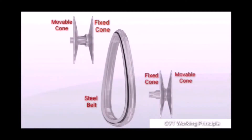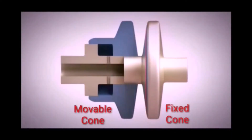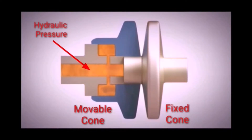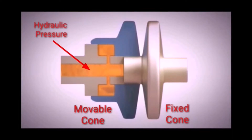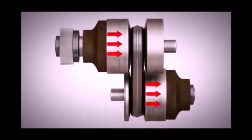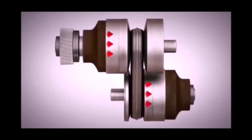CVT consists of two conical pulleys and a steel belt. It has two parts: a fixed cone and a movable cone. The movement of the movable cone of the pulley is controlled with hydraulic pressure, which is supplied through a hollow shaft from the oil pump. According to the driving conditions, the TCM will adjust the width between the cones by adjusting the hydraulic pressure and controls the vehicle speed.